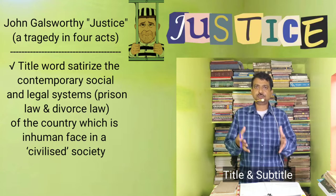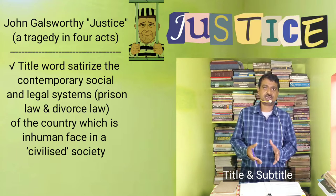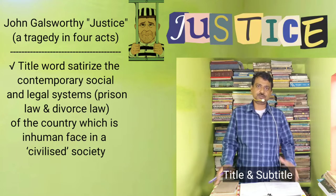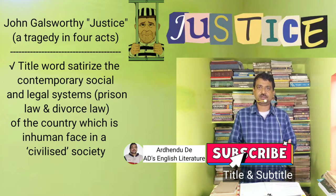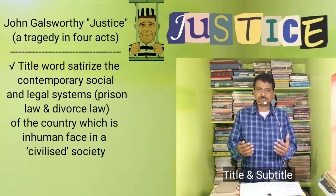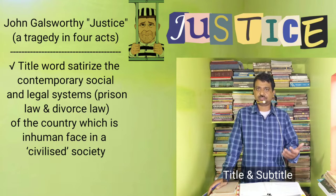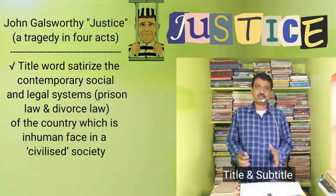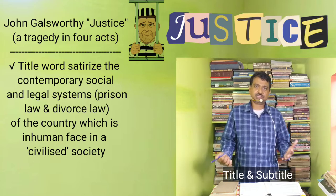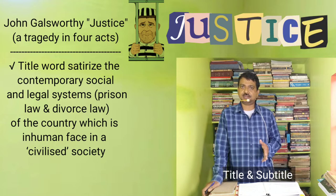Galsworthy took the pseudonym John Sinjohn. He was a representative of the literary tradition which regards art as an instrument of social debate. He believed it was the duty of an artist to examine a problem — not to provide a solution, but to acknowledge to the people of society the problems and predicaments they face. This is typically a problem playwright's view. In 'Justice', Galsworthy deliberately chose the title in order to satirize the contemporary social and legal system of the country.